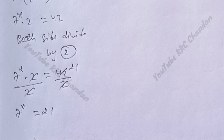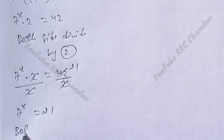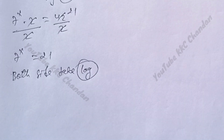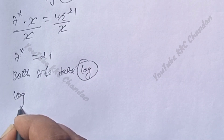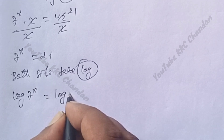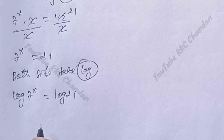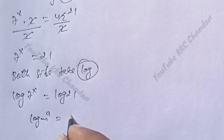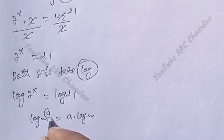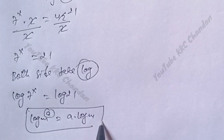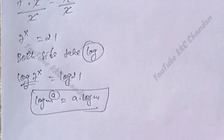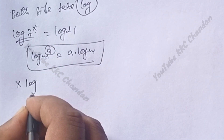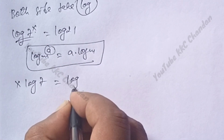For the next step, take log on both sides. So log 7 power x is equal to log 21. We know that log m power a can be written as a into log m. Applying this rule, x log 7 is equal to log 21.